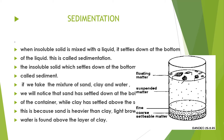Fill a glass container with a mixture of sand, clay, and water. Stir the contents well and set aside the container undisturbed for 10 minutes. After 10 minutes, you will notice that sand has settled down at the bottom of the container while clay has settled above the sand. This is because sand is heavier than clay. A light brown liquid, which is a mixture of water and the remaining clay, is found above the layer of clay. This is an example of the process of sedimentation.